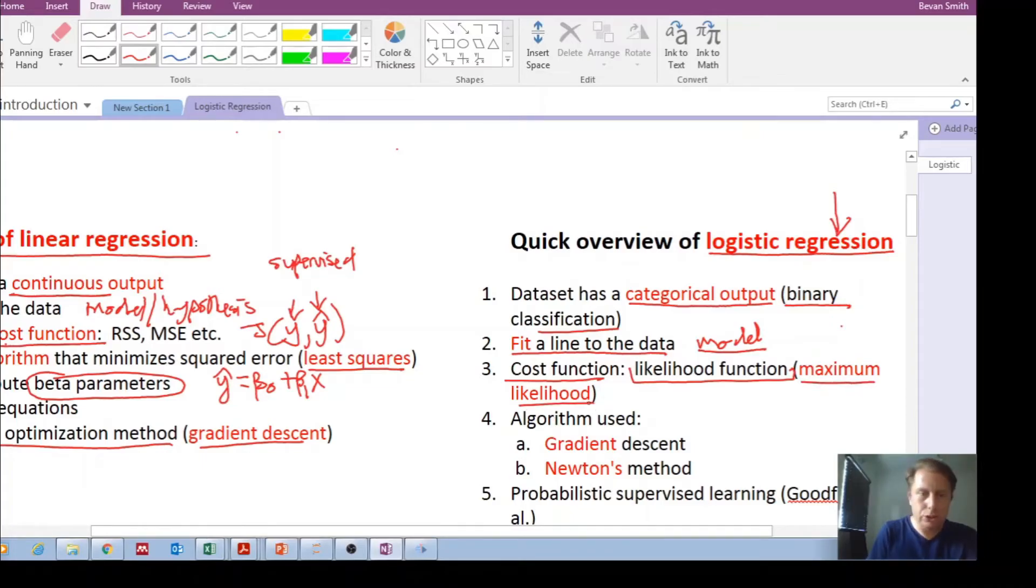Maximum likelihood to determine the parameters. In order to get this maximum likelihood, we can use perhaps two kinds of algorithms: one is the gradient descent, and the other one is Newton's method.